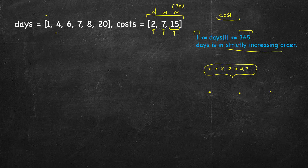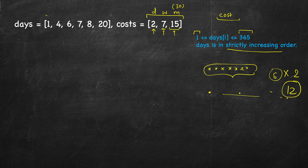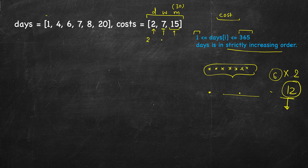A bare minimum upper bound is to take a daily pass on each travel day. So if you have 6 days of travel, that's a cost of 12. For daily pass it's 2 per day; for weekly it's 7 units for 7 days, so 1 per day; and for monthly it's 15 for 30 days, so 0.5 per day. But if you take a monthly pass and only travel 3 or 5 days, it's not beneficial.